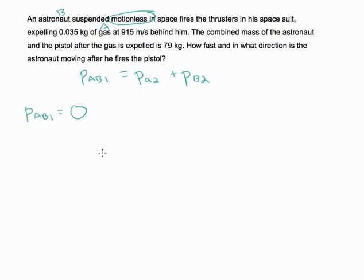We know the mass of A, our gas, is 0.035 kilograms, and the velocity of A is negative 915 meters per second because I'm saying that behind the astronaut is in the negative direction. This means that the momentum of the gas after it's released is negative 32 kilograms times meters per second.